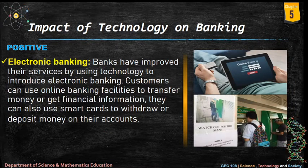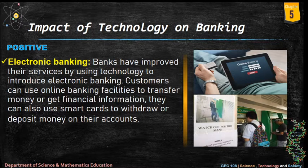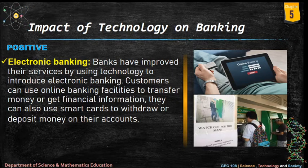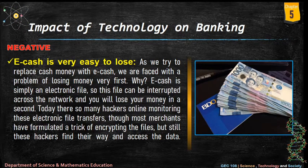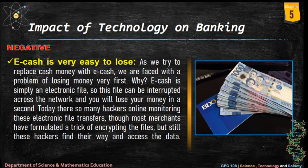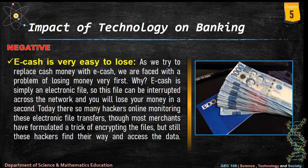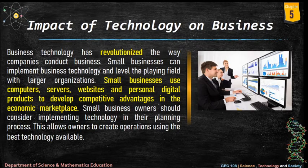Impact of technology on banking — positive impact: banks have improved their services by using technology to introduce electronic banking. Customers can use online banking facilities to transfer money or get financial information, and use smart cards to withdraw or deposit money. Negative impact — e-cash is very easy to lose. As we try to replace cash with e-cash, e-cash is simply an electronic file that can be intercepted across the network, causing loss of money. There are many hackers online monitoring electronic file transfers, and though most merchants encrypt files, hackers still find ways to access the data.